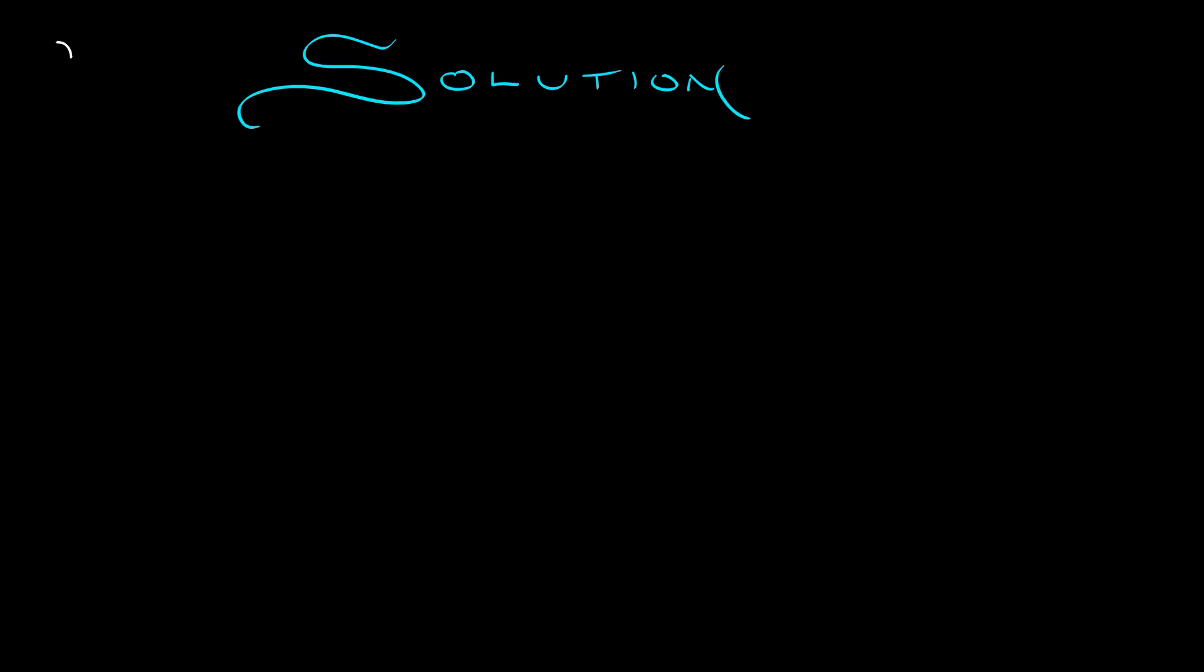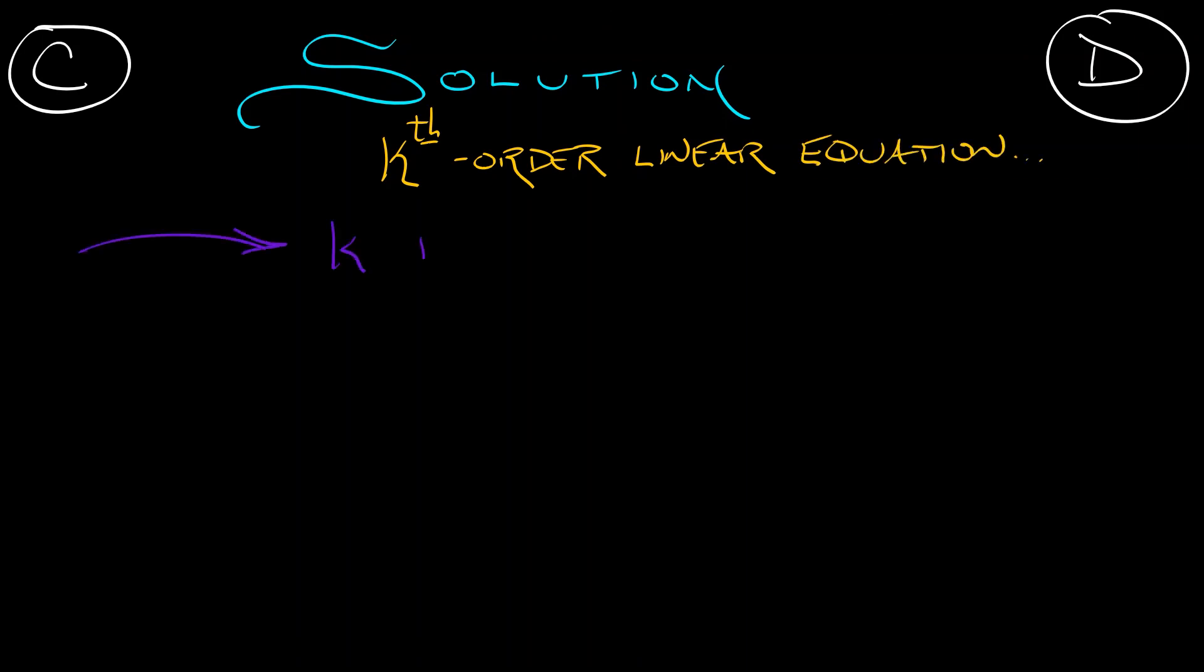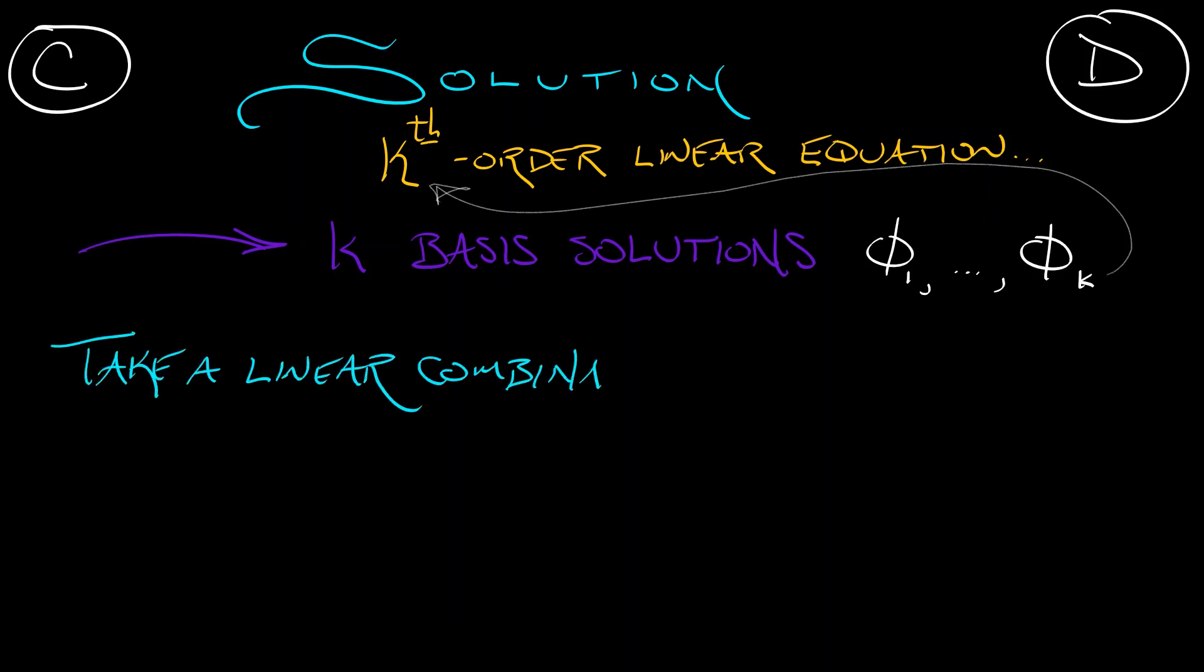So, in summary, if you want to know the solution to your continuous time, discrete time, k-th order linear equation, then what you do is you find the roots of the characteristic polynomial, extract the k basis solutions, phi 1 up through phi k, and then you can express your solution x as a linear combination of these basis solutions.